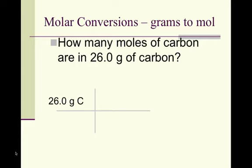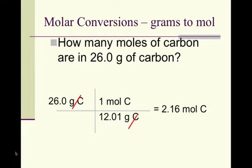Now, if grams is on top of this first box, it must go at the bottom of the next box. We know that grams will cancel, grams of carbon cancels, and we're left with moles of carbon. If we multiply the top boxes and divide by the bottom boxes, you notice that we'll get about 2.16 moles of carbon, and that is the proper number of significant figures.